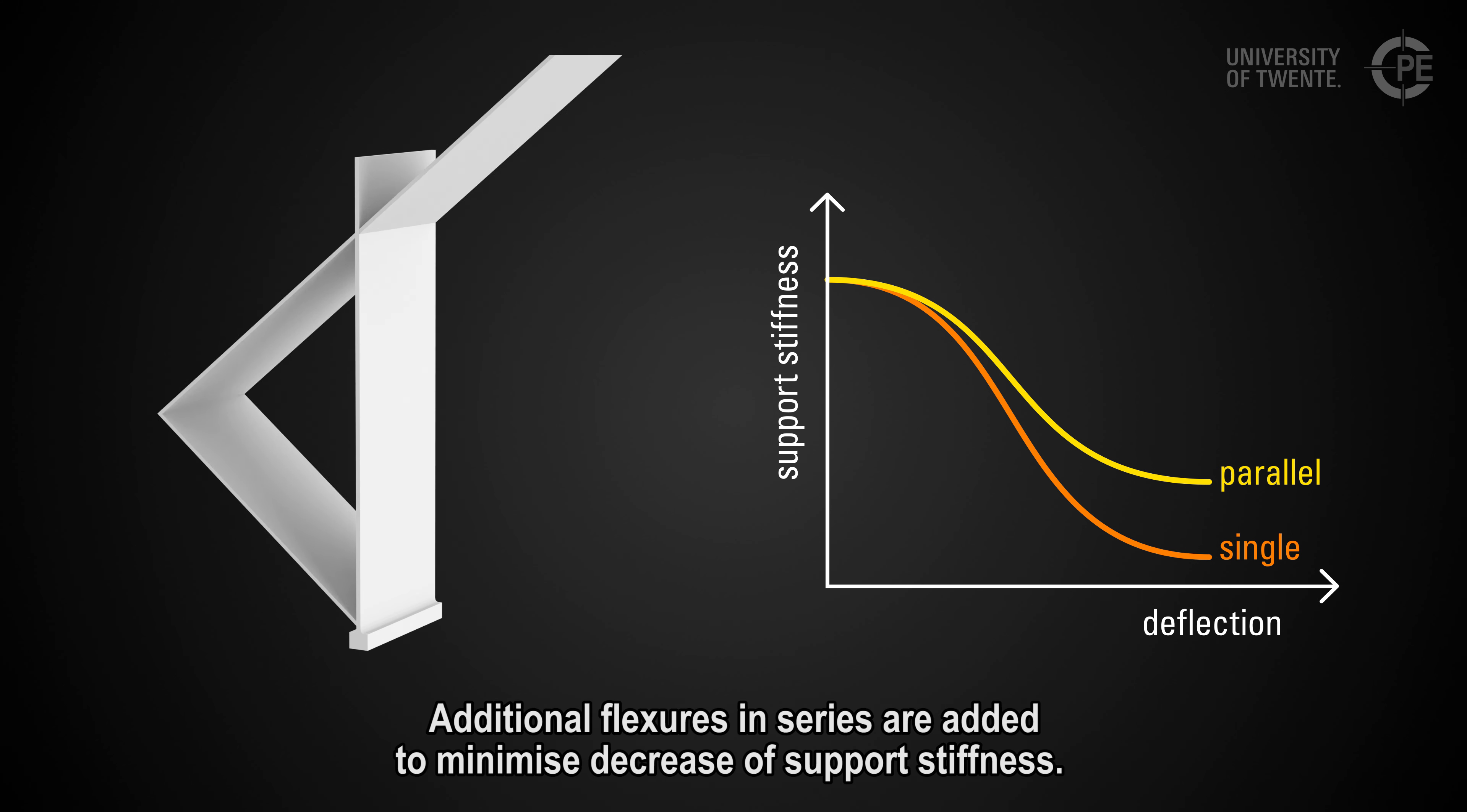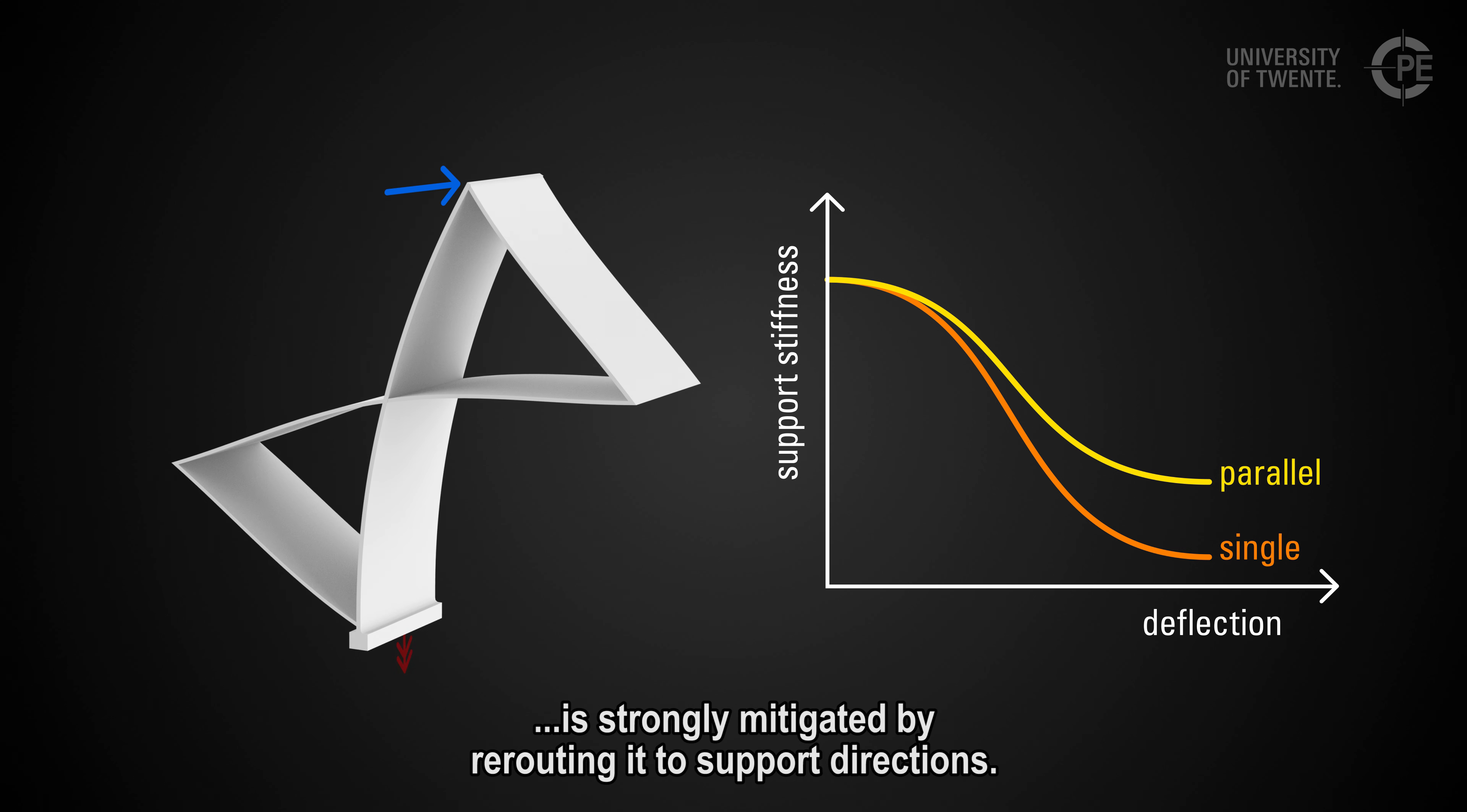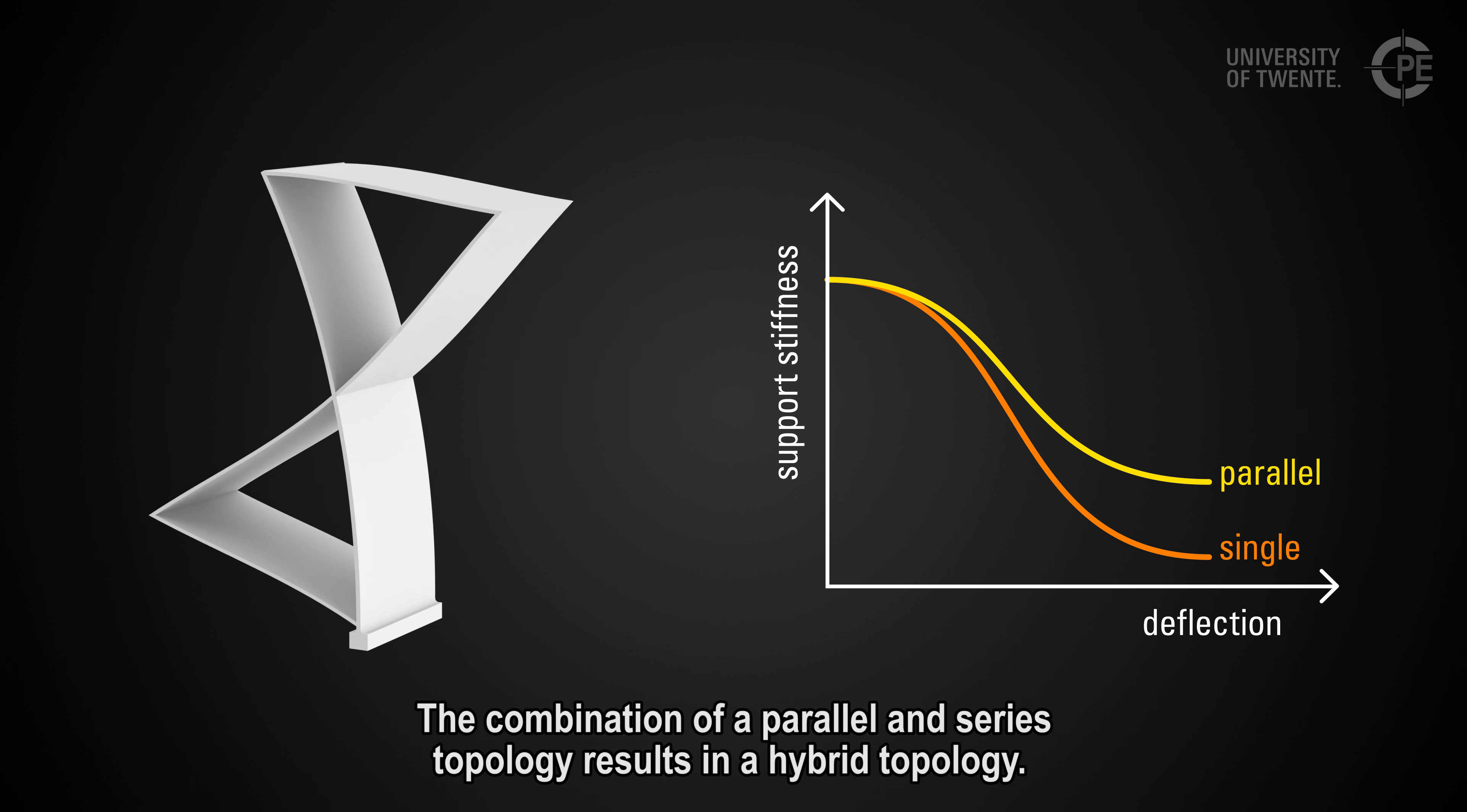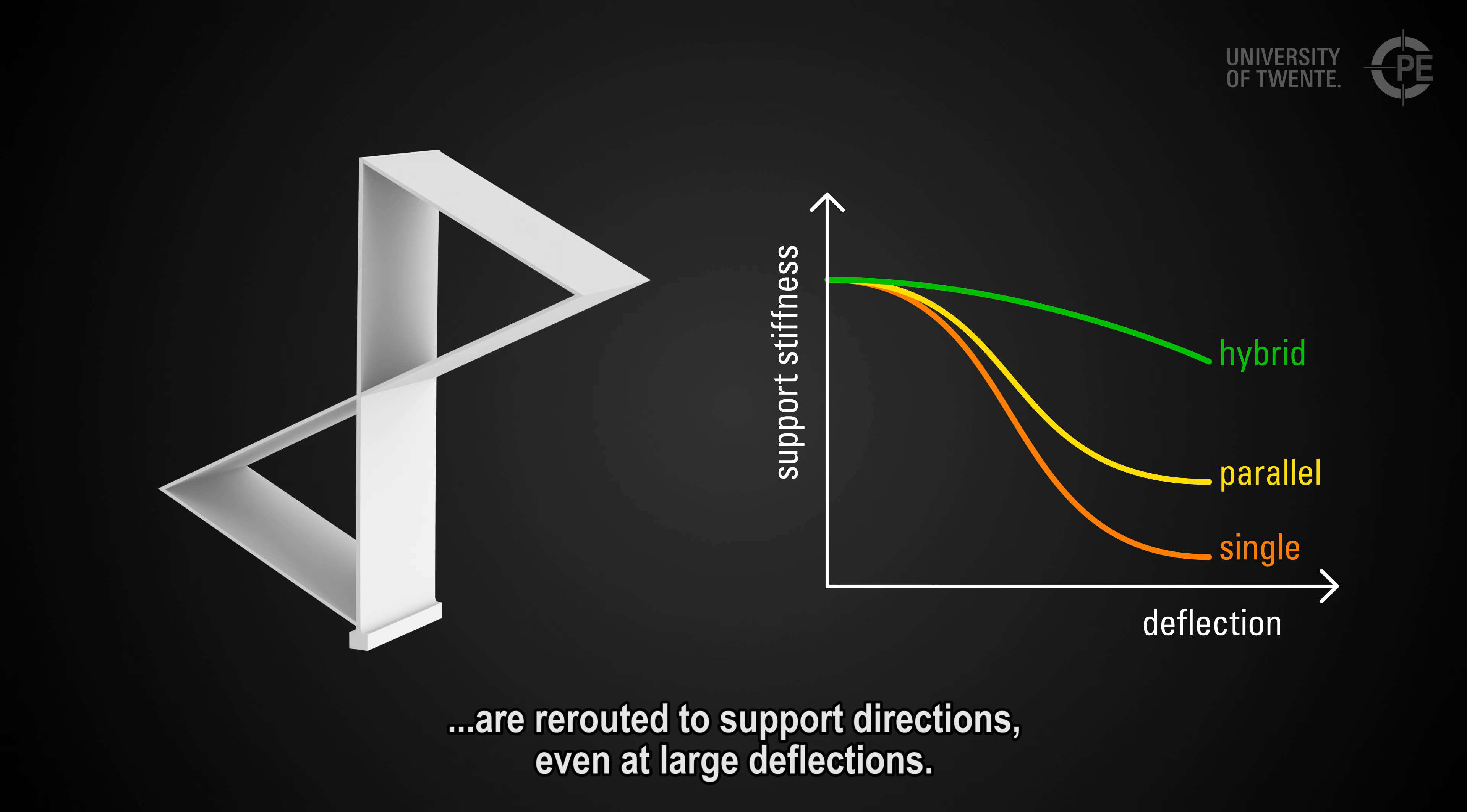Additional flexures in series are added to minimize decrease of support stiffness. In this case, the torsion component in the leaf spring is strongly mitigated by rerouting it to support directions. The combination of a parallel and series topology results in a hybrid topology. Unwanted forces in compliant directions are rerouted to support directions even at large deflections.